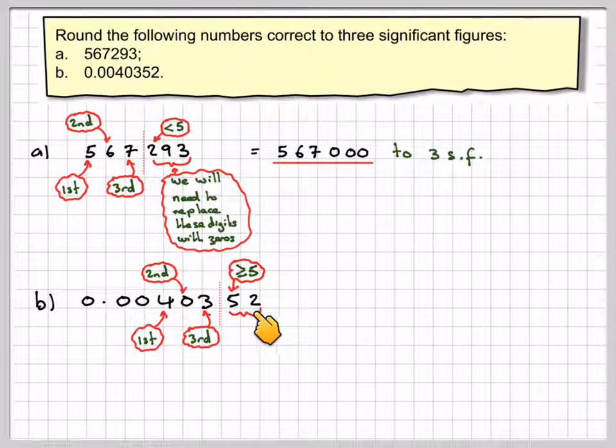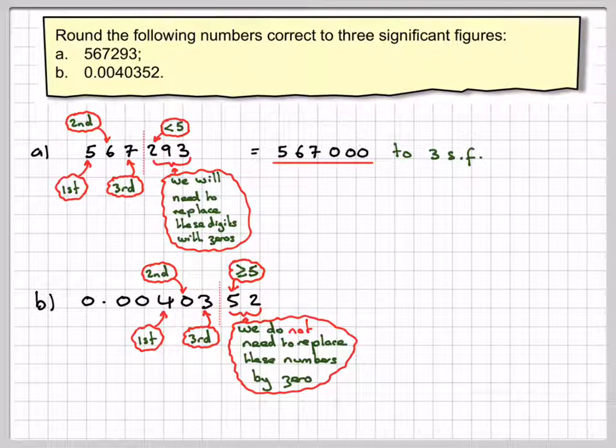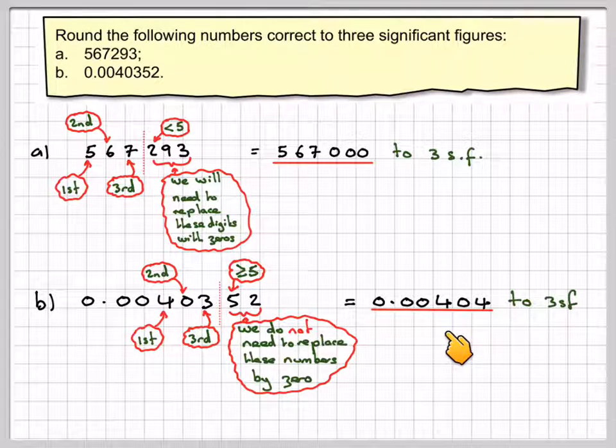Now the 5 and the 2 now completely disappear. So we do not need to replace them with any zeros or anything like that. They just don't need to appear in the answer. So the correct answer will be 0.00404, and that final 3 here becoming a 4 to 3 significant figures.